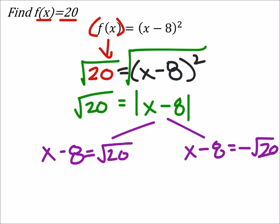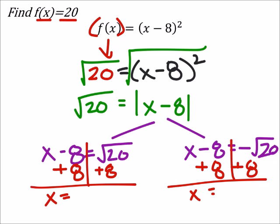For both of these, all I need to do is add 8 to both sides. Since these are in like terms, we've got 8 plus the square root of 20 and here we have 8 minus the square root of 20.